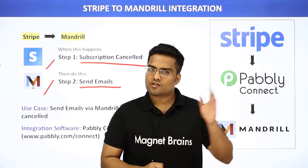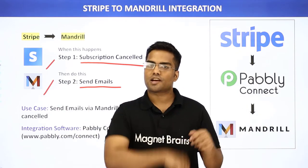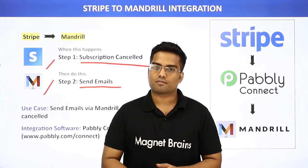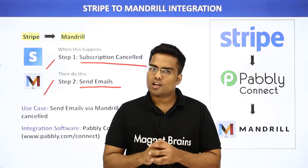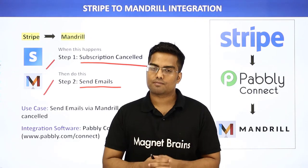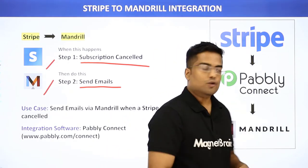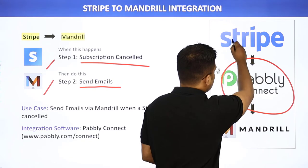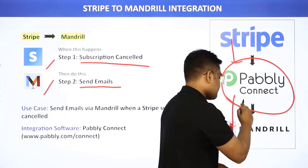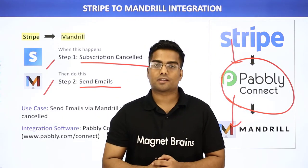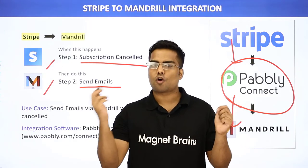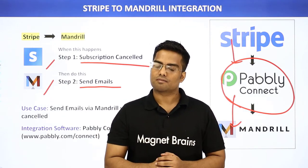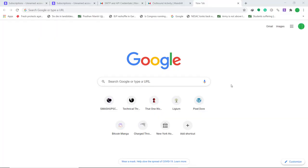Stripe and Mandrill are two different applications, hence there is no direct data flow between them. In cases like these we need a third app to connect them both, and in this video we will use Pably Connect to integrate Stripe and Mandrill. The best part of using Pably Connect is there is no need for coding skills or programming knowledge — it can be done easily.